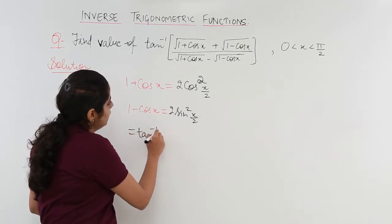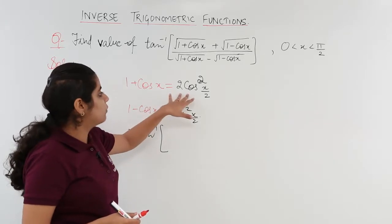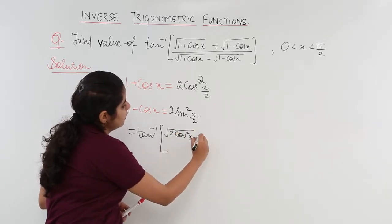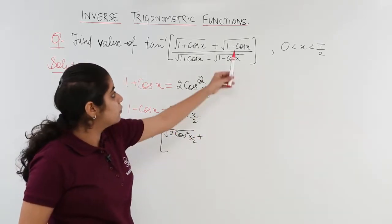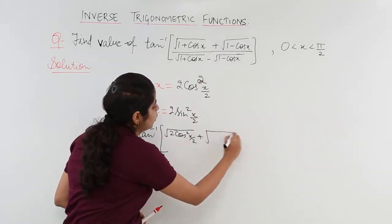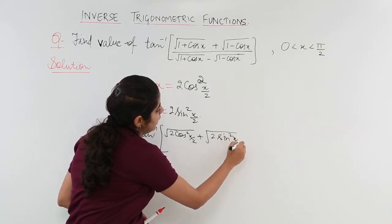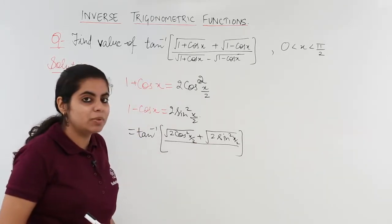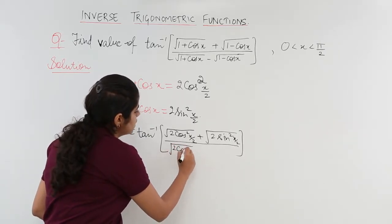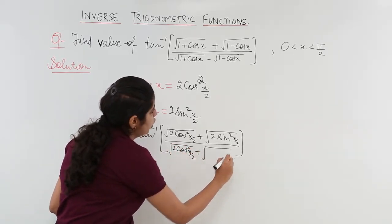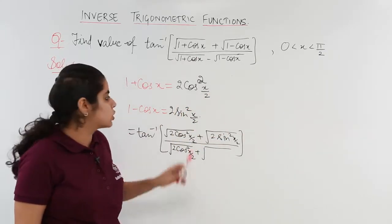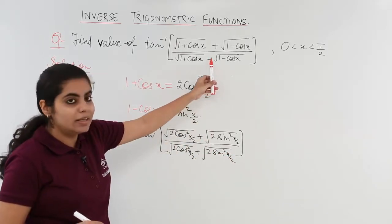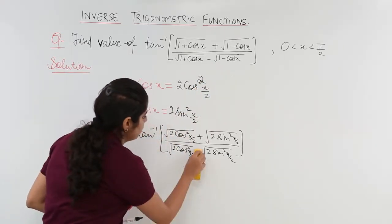Now my question changes. Under root of (1+cosx) becomes √(2cos²(x/2)), and under root of (1-cosx) becomes √(2sin²(x/2)) — that covers the numerator. The denominator again has 1+cosx which is √(2cos²(x/2)), minus 1−cosx which is √(2sin²(x/2)). The denominator had a minus sign, so it becomes minus, not plus.